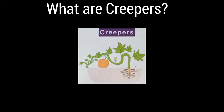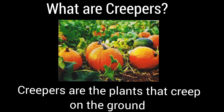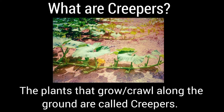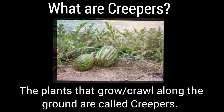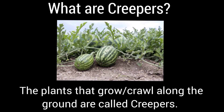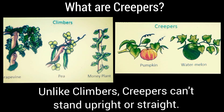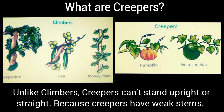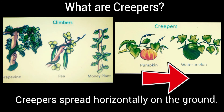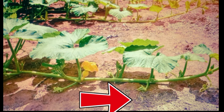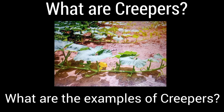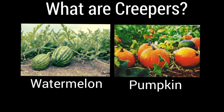What are creepers? Creepers are plants that creep on the ground — that means plants that grow along or crawl along the ground are called creepers. Unlike climbers, creepers cannot stand upright or straight because they have weak stems, so creepers spread horizontally on the ground. Examples of creepers are watermelon and pumpkin.